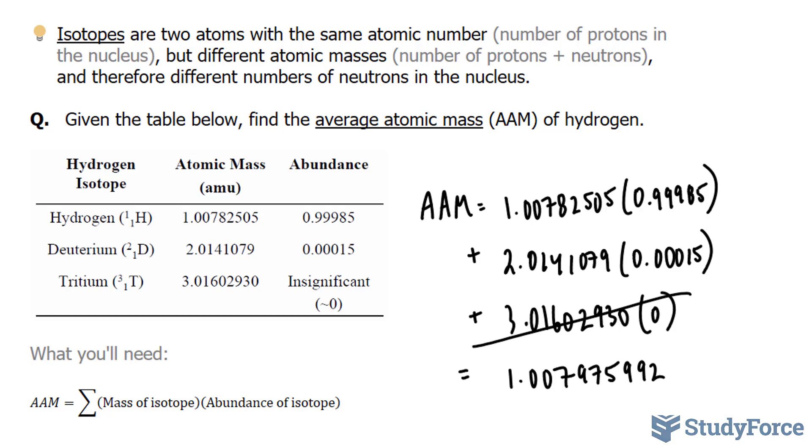Now, it turns out for hydrogen, this is an approximate number, whereas 0.00015 is an exact number as well. Now, it's not stated in the question, but that is the general case for this particular hydrogen isotope. Therefore, this is our only approximate number, and our final answer needs to go to five significant figures.